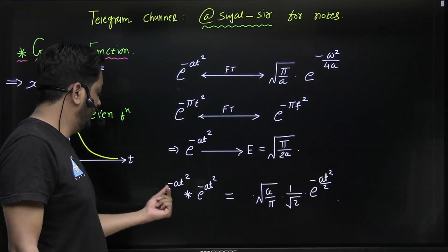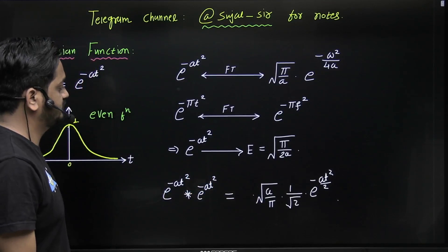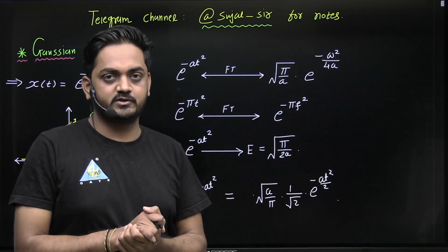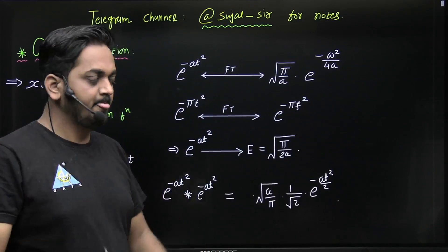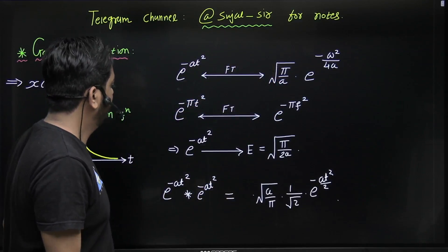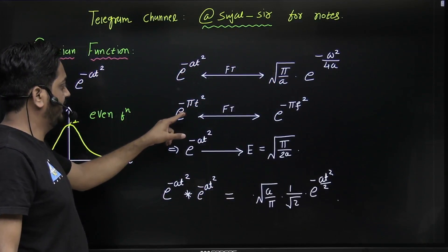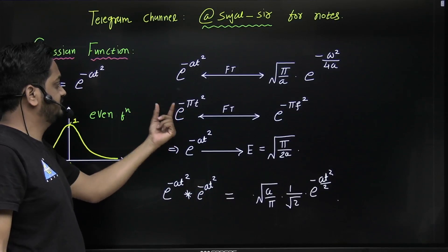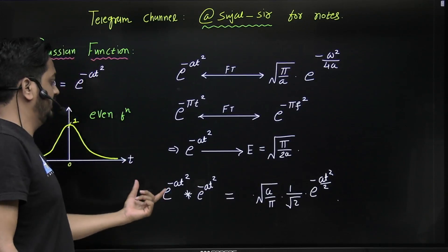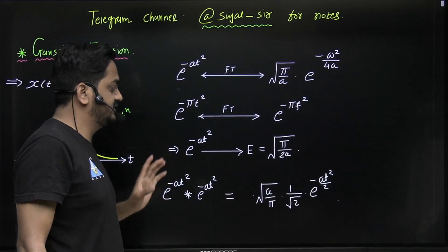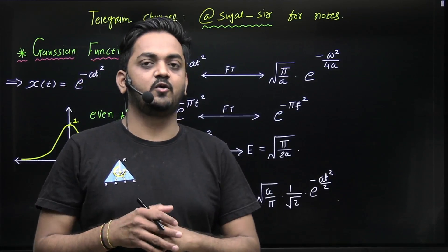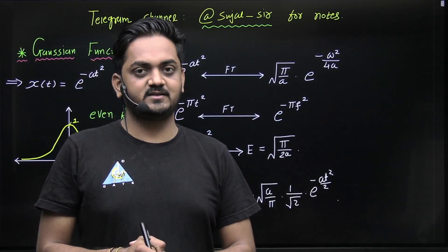These are the important results of the Gaussian function. First, it is an even function. Second, its Fourier transform is √(π/a) · e^(-ω²/4a), and with a = π, e^(-πt²) transforms to e^(-πf²). Third, its energy is √(π/2a). Fourth, the convolution of the Gaussian with itself gives another Gaussian. These are very important — thank you so much.